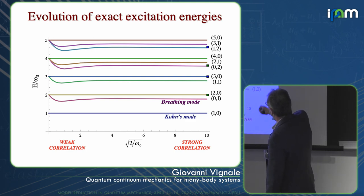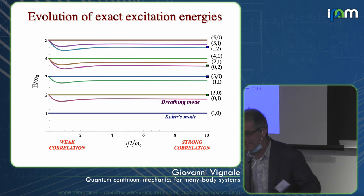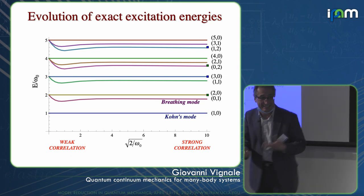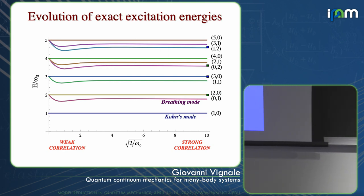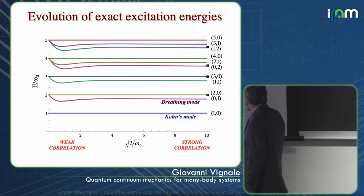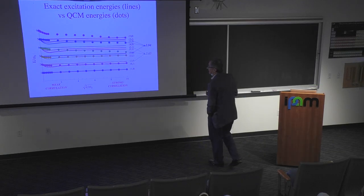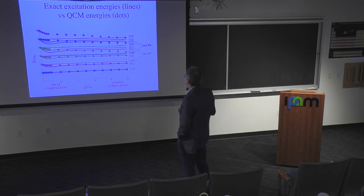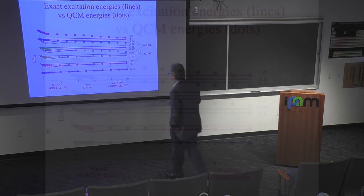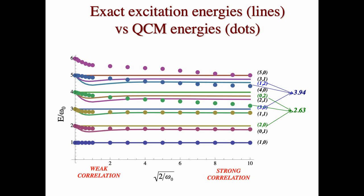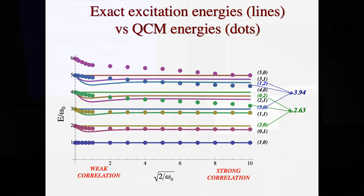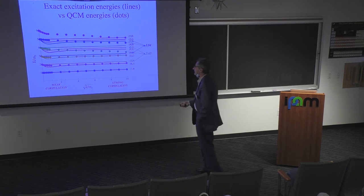Some modes stand out. The center-of-mass mode is just the motion of the center of mass — completely unaffected by the interaction, the system oscillating back and forth. Another interesting mode is the breathing mode — no motion of the center of mass, but the relative coordinate goes in and out. These two are essentially the two classical phonons of this system. All other excitations are much more quantum mechanical and involve deformation of the wave function on a much smaller scale. Solving with the elastic approximation works very well for these modes.